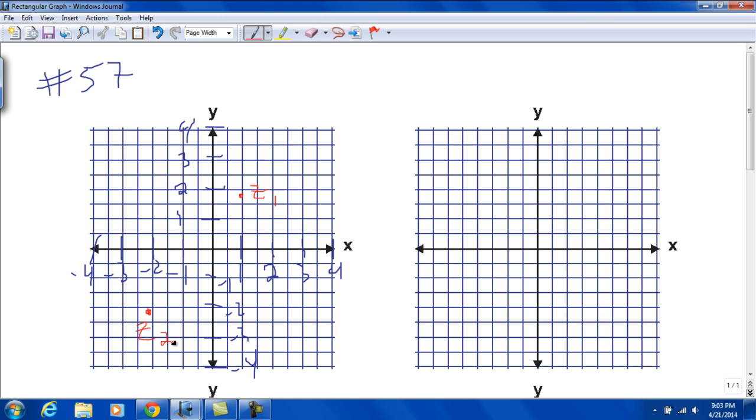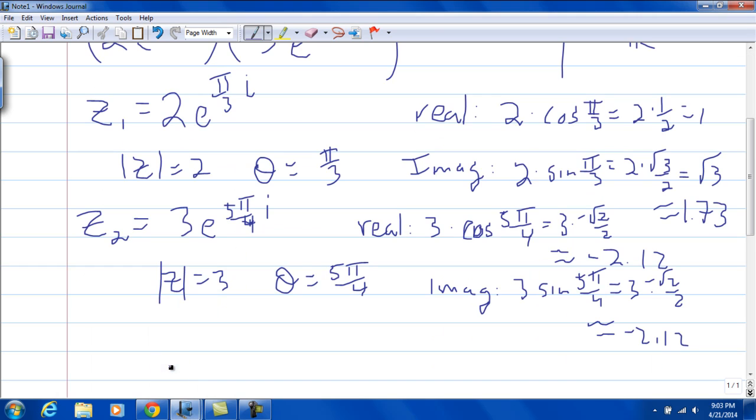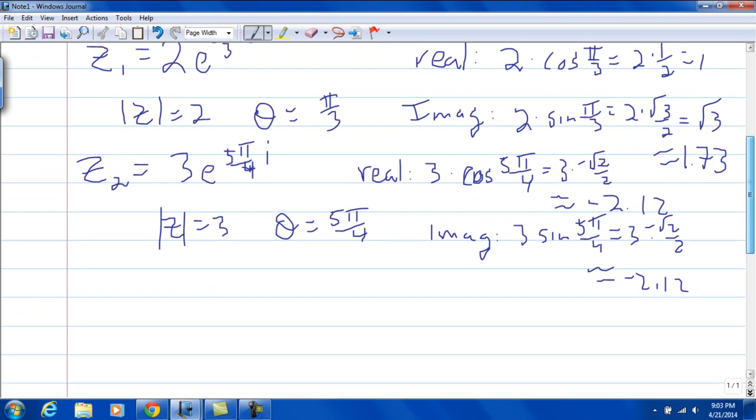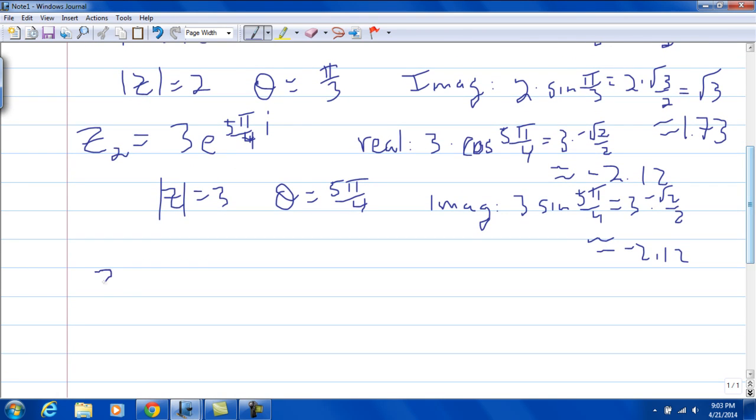Now we've got to look at the product of these two. So we're talking about z1 times z2. What we're going to do is have the magnitude of z1 times the magnitude of z2.